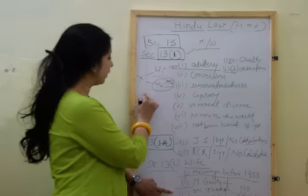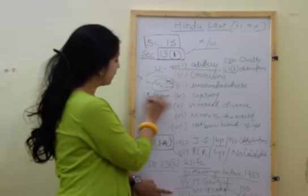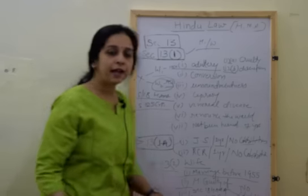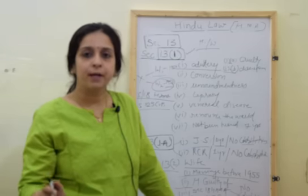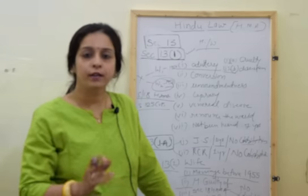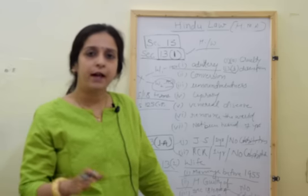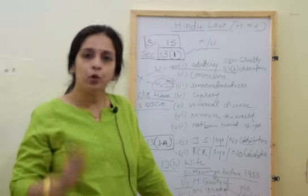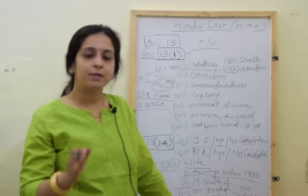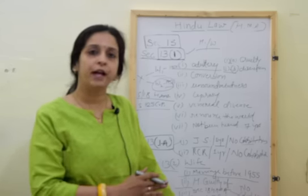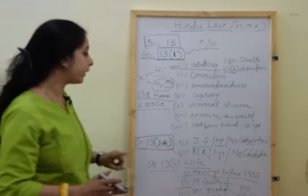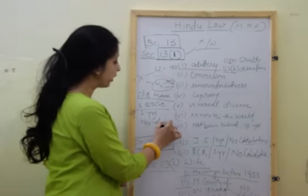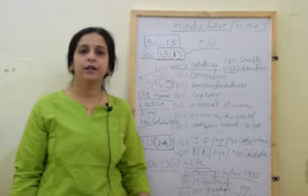Third: under Section 18 of HAMA and Section 125 of CrPC — if there is any case filed under Section 125 CrPC by the wife against her husband for maintenance, or a Hindu wife filed a petition for maintenance under Section 18 of the Hindu Adoption and Maintenance Act — in both situations, if a judgment is passed in favor of the wife and the wife is living separately, after completion of one year with no cohabitation between the parties, it is also a ground for divorce.